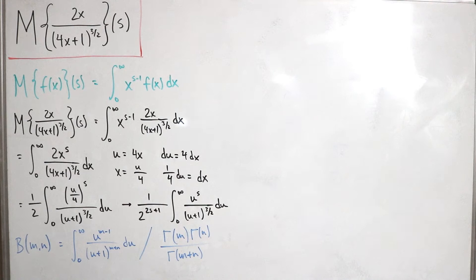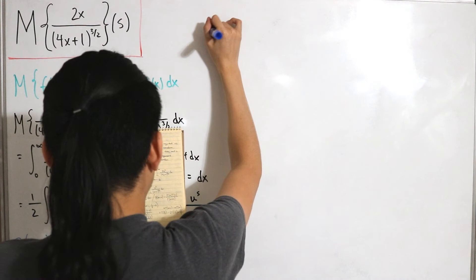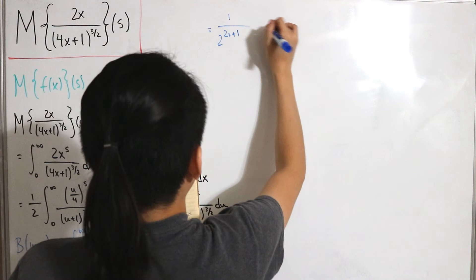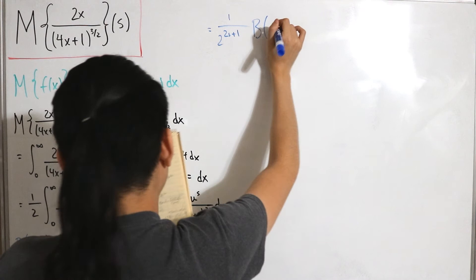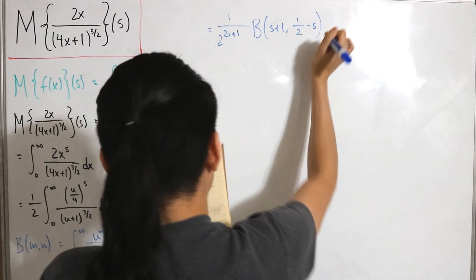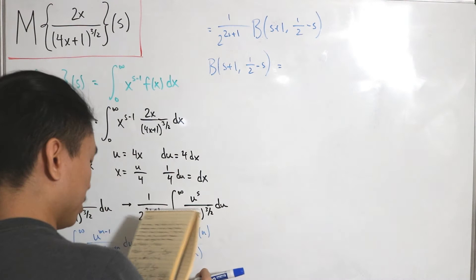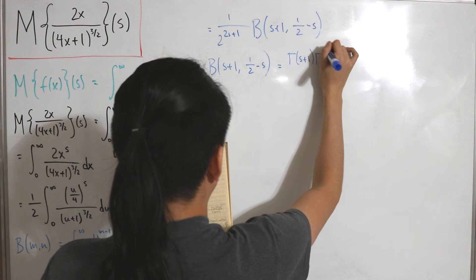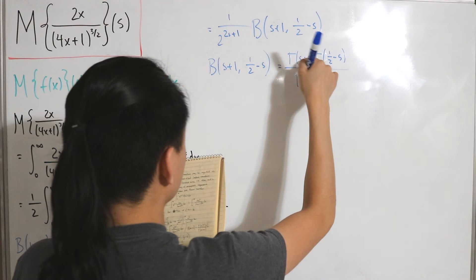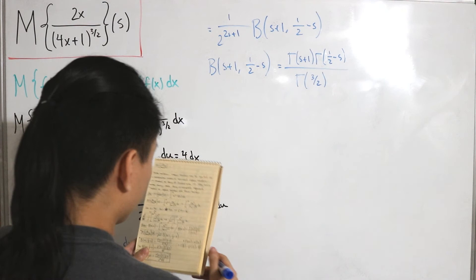Putting everything together, the Mellin transform so far equals 1 divided by 2 to the power (2s + 1), multiplied by the beta function with inputs (s + 1) and (1/2 minus s). Now we calculate what beta(s + 1, 1/2 minus s) equals using the gamma formula: it's gamma(s + 1) times gamma(1/2 minus s), divided by gamma of the sum of those two inputs, which equals gamma(3/2).